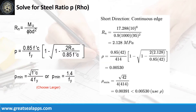Given short direction, continuous edge moment is 17.28 kN·m; resistance factor equals 0.9; B equals 1,000 mm; and D equals 95 mm. The beam design ratio RN equals 2.128 MPa, and reinforcement ratio ρ equals 0.0053.